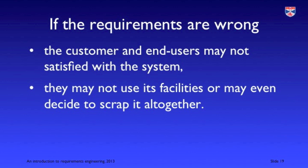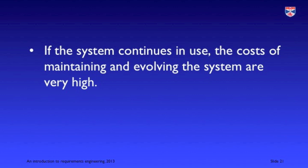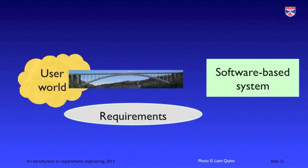Requirements errors or omissions are frequently a cause of customer dissatisfaction — users may not like the system, may not use it to its full potential, or may simply abandon it as not fit for purpose. Sometimes incorrect requirements lead to system unreliability, with frequent crashes and user errors. We also see inappropriate requirements leading to post-delivery costs, because the system doesn't fit its environment, requiring extra maintenance work after delivery.